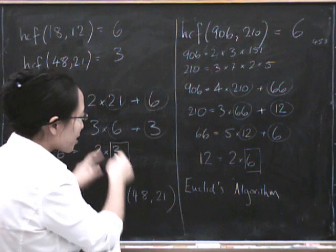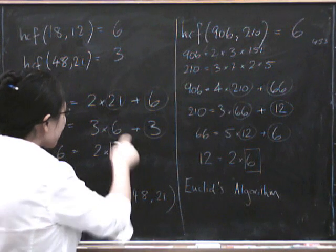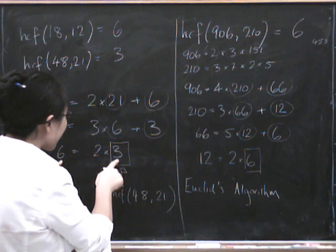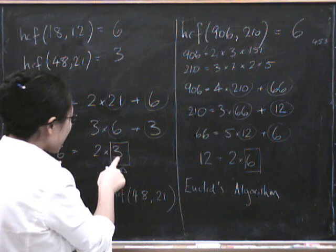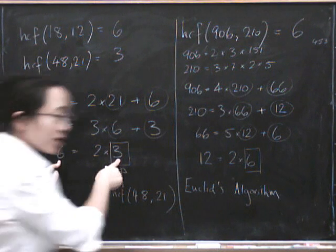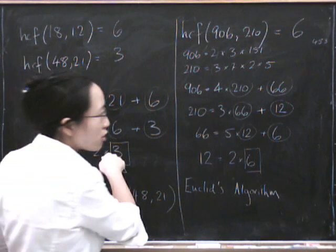So it becomes easier and easier and eventually the number just will go into it. So by the time you've got 6 and 3 this one is actually divisible by 3 so you know that the highest common factor has to be 3 so it stops.